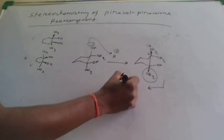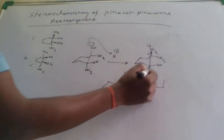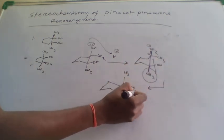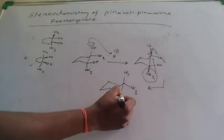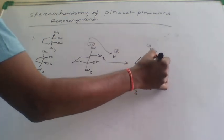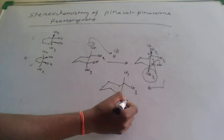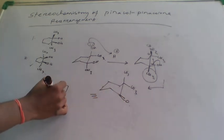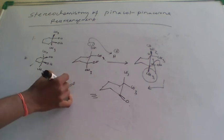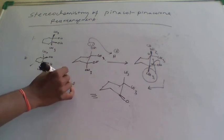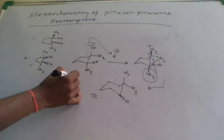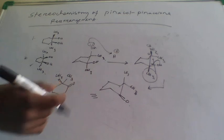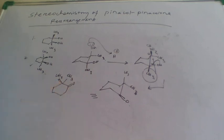After rearrangement, the CH3 migrates and the OH comes from below. This bond migrates to form the ketone product. There is no need to resolve the final stereochemistry further because the two CH3 groups in this product are the same. Thank you.